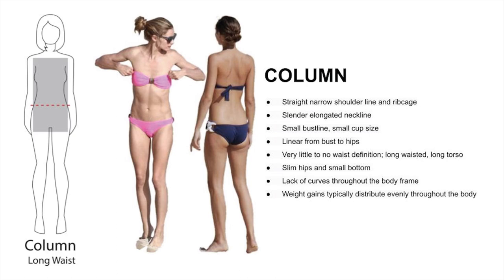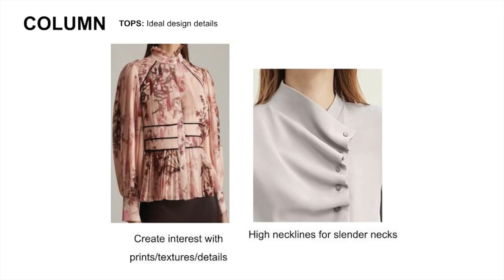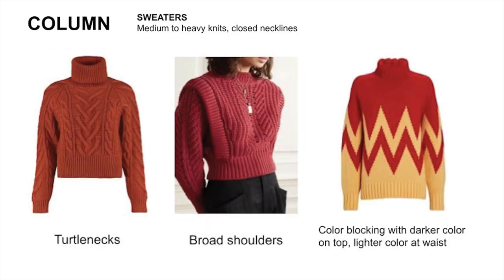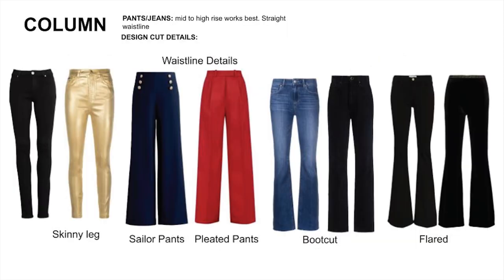The column is the tall, slender sister silhouette to the brick. For tops, the emphasis should be building up a linear shape with architectural and seaming details. Here are examples of necklines to showcase the slender long neckline. For sweaters, texture and heavy knits build up definition for this lean, linear silhouette. For pants and jeans, mid to high rises work best for the long torso and waist — make sure the waist is not nipped in.